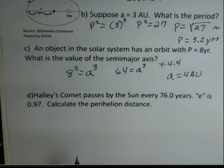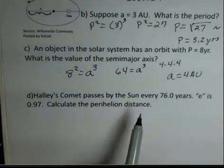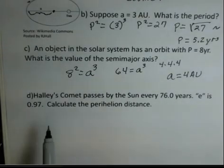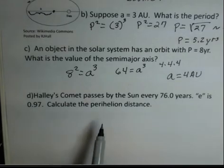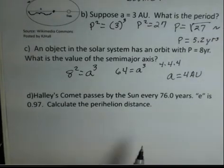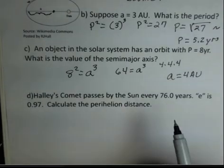Halley's Comet passes close to the sun at perihelion about every 76 years, and its eccentricity is 0.97. What is the perihelion distance? We're given 76 years here. That's our value for P.